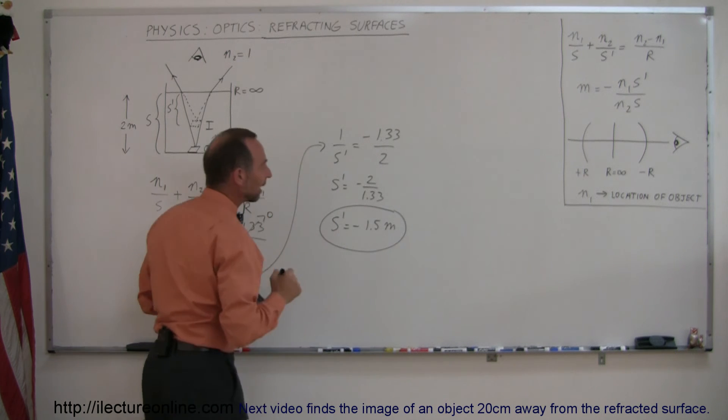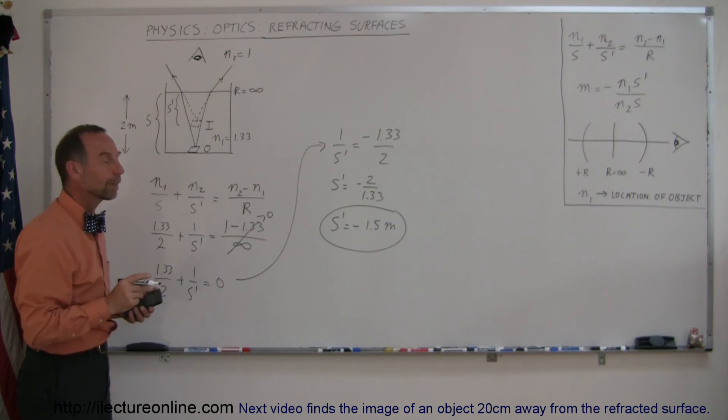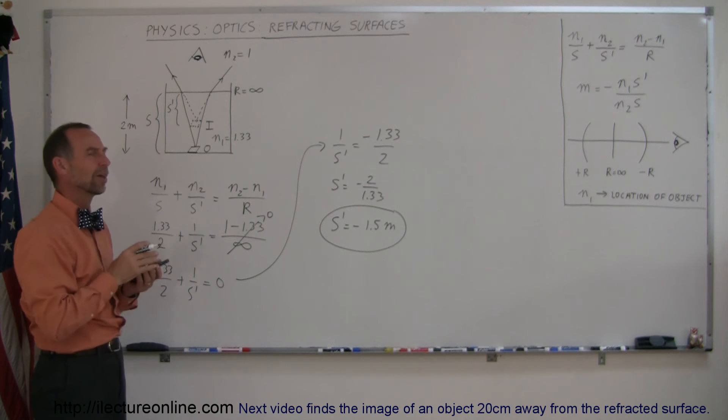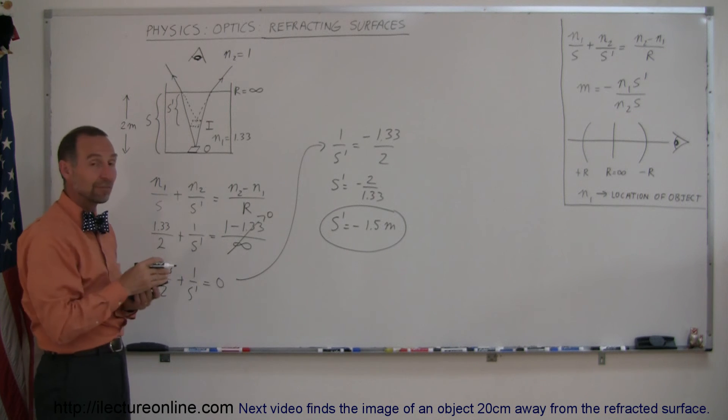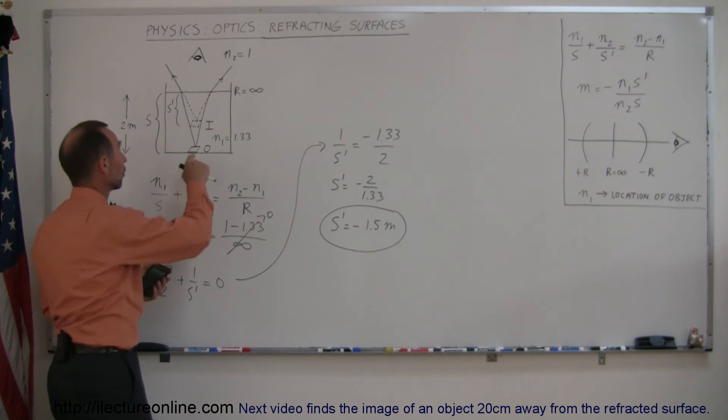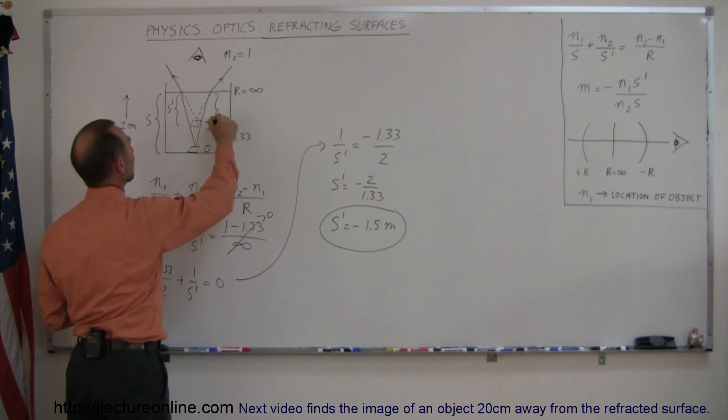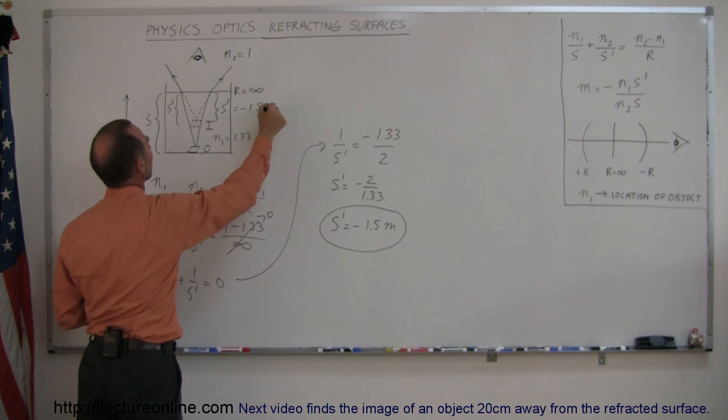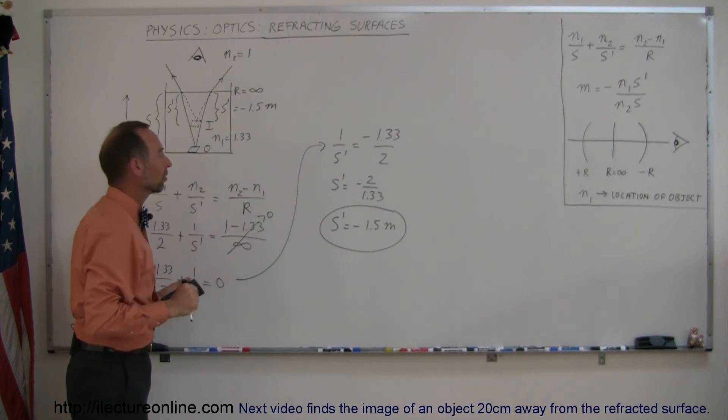The image distance is 1.5 meters, but it's negative 1.5 meters. What does that mean? Negative 1.5 meters means it's on the same side as the object, that makes it a virtual image. So S prime equals minus 1.5 meters, on the same side as the object.